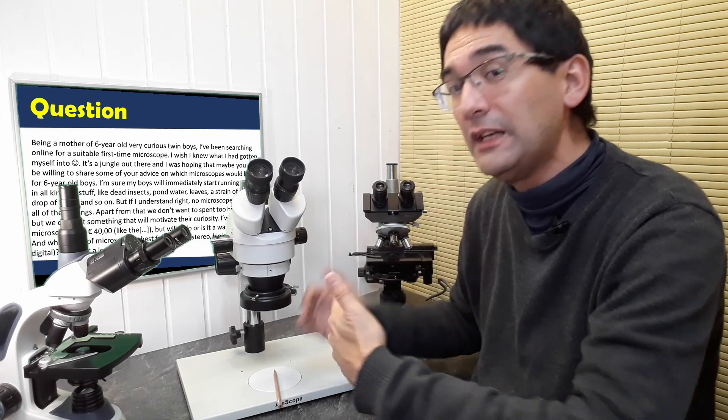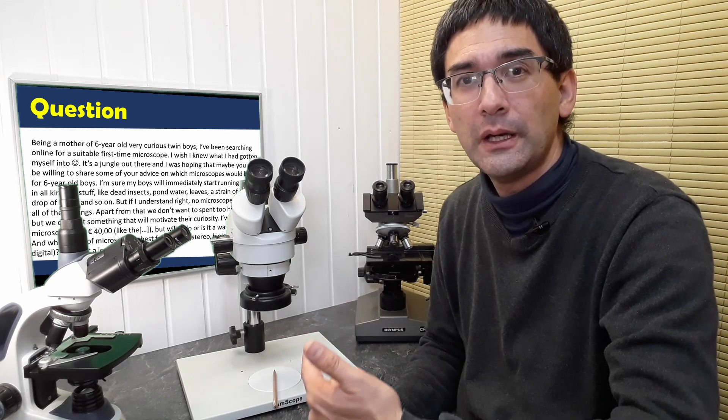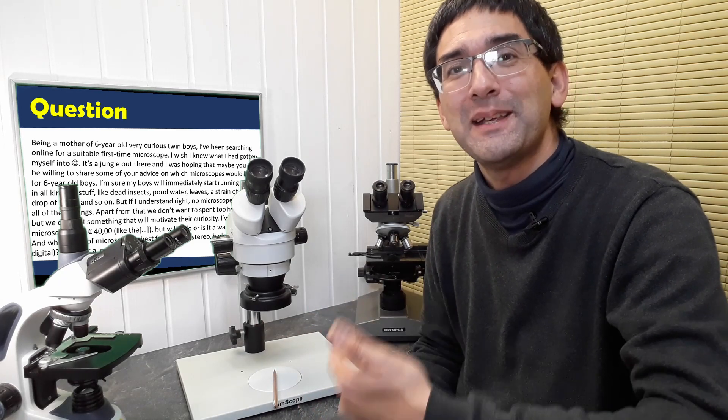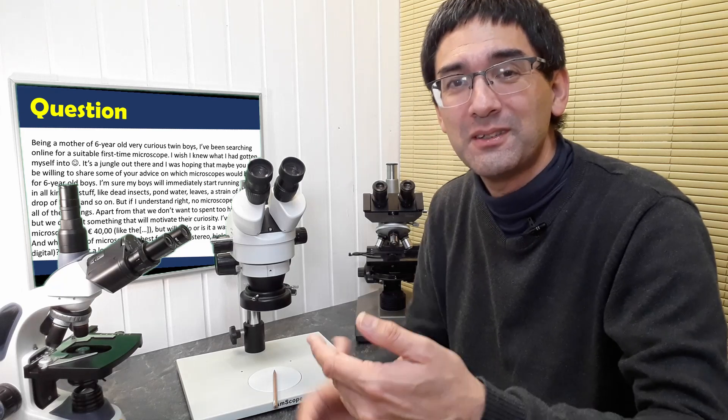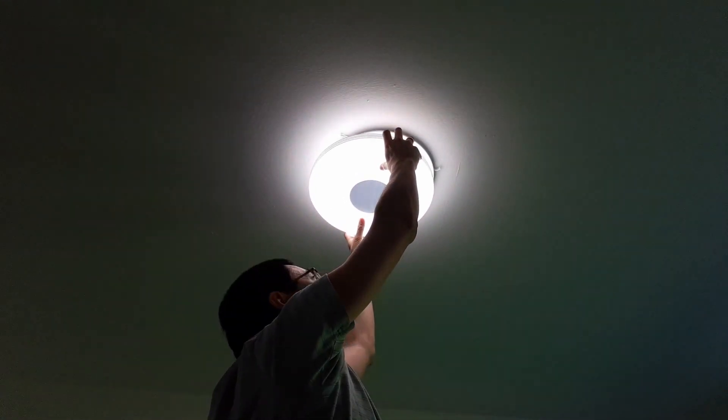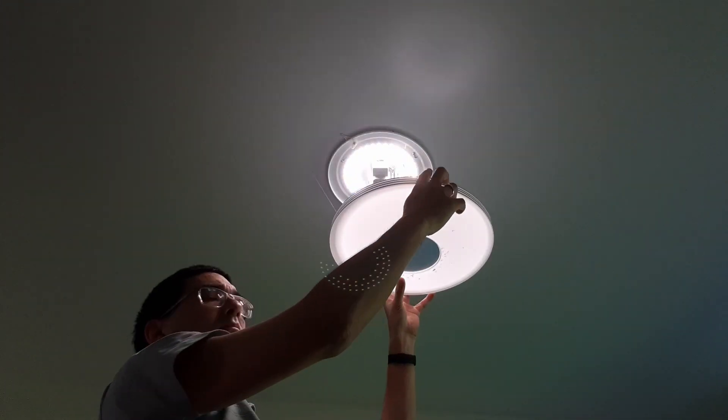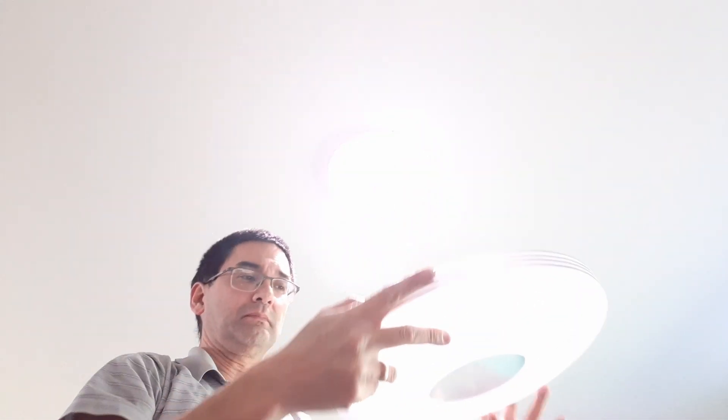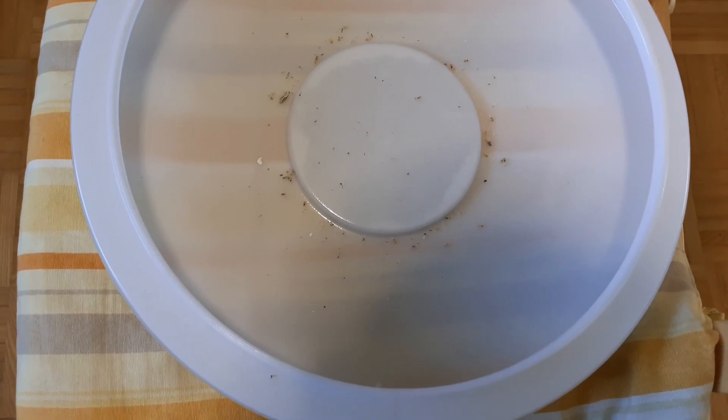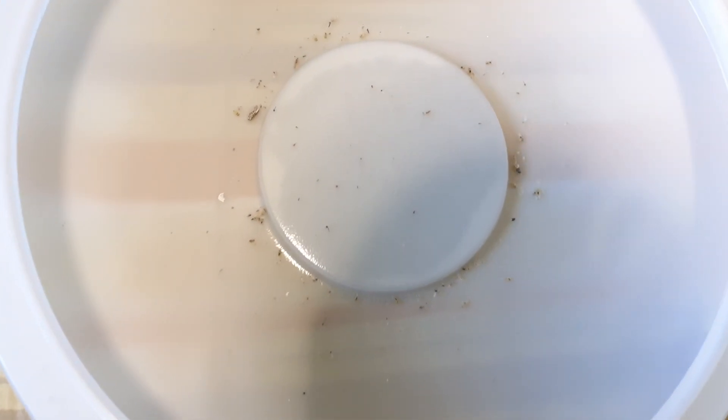And this basically means that it's much more suitable for children, because the image is not only less abstract. You can interact with the object much better. And also, you do not require any specimen preparation. You just take the object, you collect the object, you put it under the microscope, usually on a Petri dish or a small dish, so that you can move it around more easily. And then you look at it. So there, it's quite easy and straightforward.